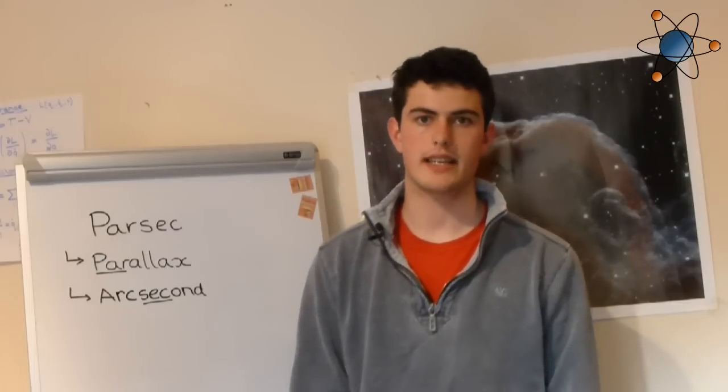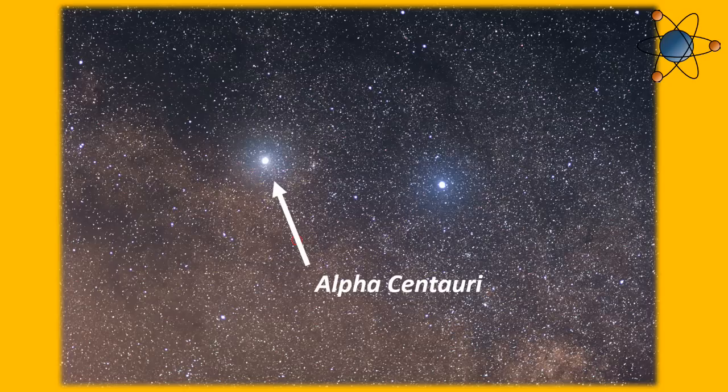To put that in context, one of the closest stars to Earth, Alpha Centauri, is about 1.3 parsecs away.